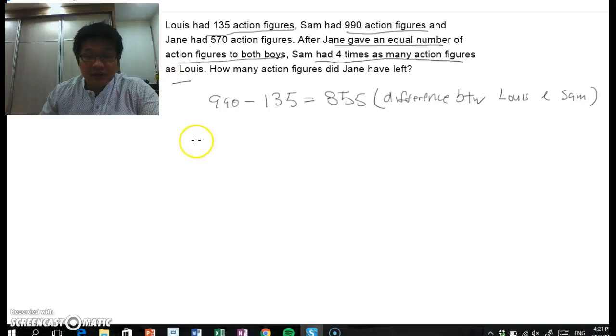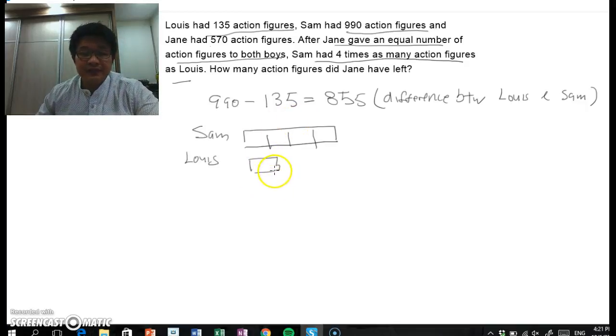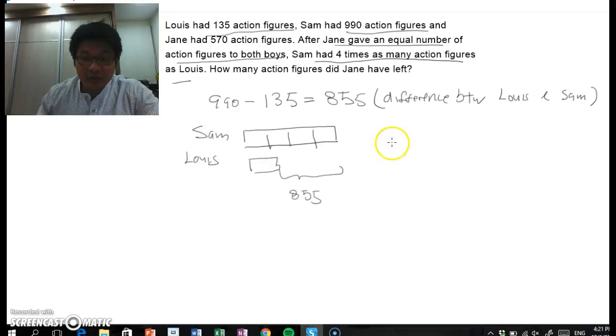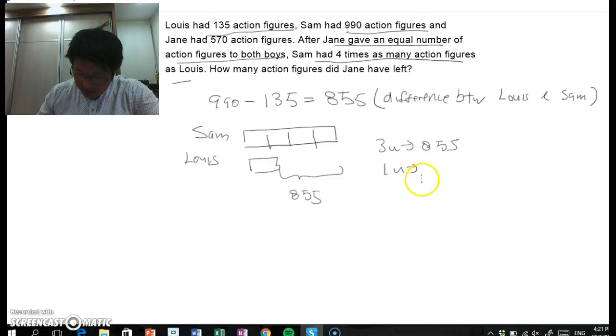So we can draw a model. Sam, Louis. Sam had 4 times as many so Sam would have 4 units. And Louis will have 1 unit. Now, the difference here, the 3 units, will not change. So this would be 855. From this point onwards, it's pretty much auto. 3 units would be 855. 1 unit would therefore be 285.